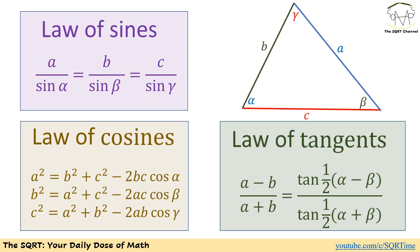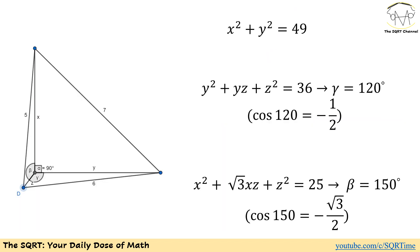Using the law of cosines — a² = b² + c² − 2bc·cos(α) — for the triangle x² + y² = 49, there is no cross term, so the angle between x and y is 90 degrees.